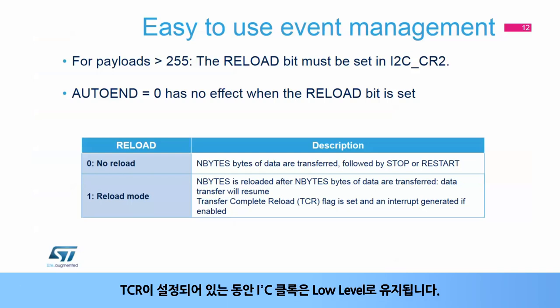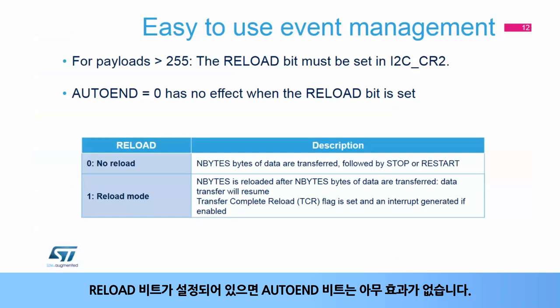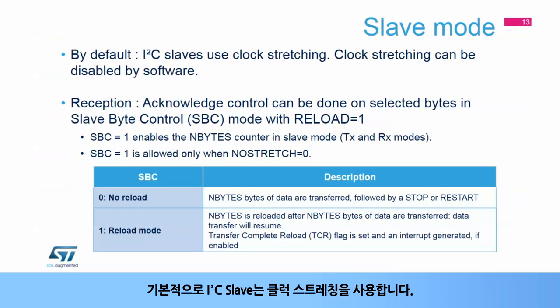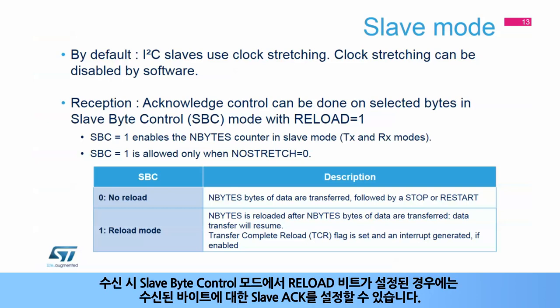The I2C clock is stretched low as long as TCR is set. The reload bit is used in master mode when the payload is greater than 255 bytes, and in slave mode when slave byte control is enabled. When the reload bit is set, the auto-end bit has no effect. By default, the I2C slave uses clock stretching. The clock stretching feature can be disabled by default. In reception, the slave acknowledge on received byte behavior can be configured when slave byte control mode is selected together with the reload bit being set.